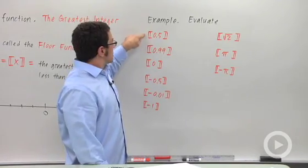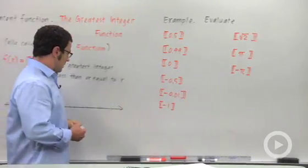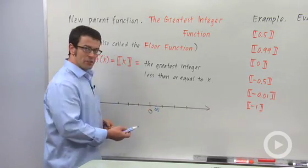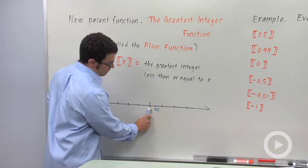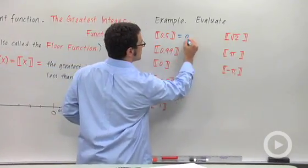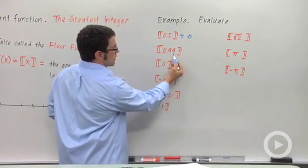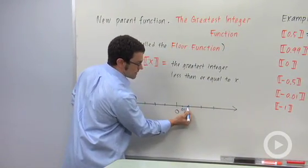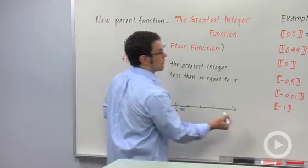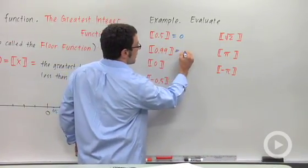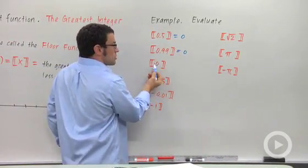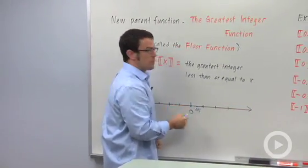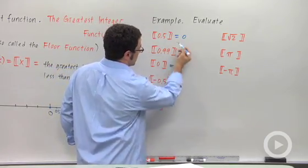The greatest integer less than or equal to 0.5 — if you go on the number line and find 0.5 right here, the greatest integer less than or equal to 0.5 is 0. Similarly, 0.99 is not quite 1, so its greatest integer is also 0. And the greatest integer less than or equal to 0 is itself 0. So all of these numbers have the same greatest integer: 0.